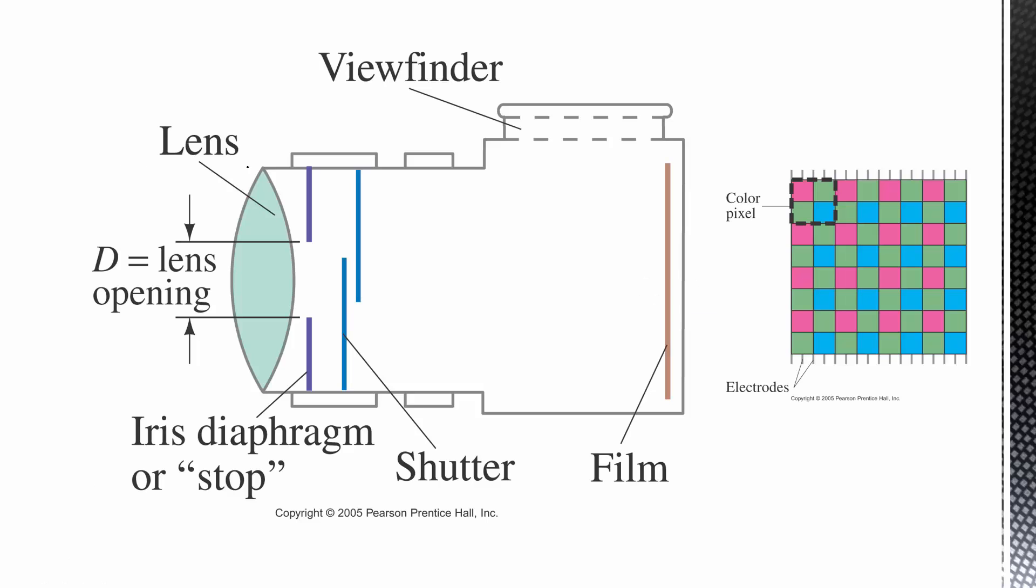So cameras have converging lenses, and it takes light that is passing through the lens and focuses it back here on what used to be film and what sometimes still is. But more often now, in digital cameras, it's what we call a CCD, which stands for a charge-coupled device, and it produces a real image. This is not the focal length, necessarily, of the lens, but it is the image location.